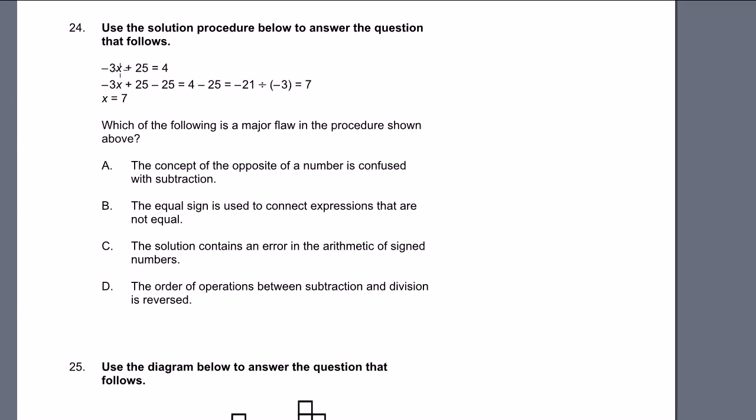So let's look for some flaws. The way I always like to do this is just think about how I would have done it. So if I started with minus 3x plus 25 equals 4, the first thing I would do is subtract 25 from both sides of the equation. So I would take minus 25 from the left-hand side, and then minus 25 from the right-hand side. And it looks like that's what the person did.